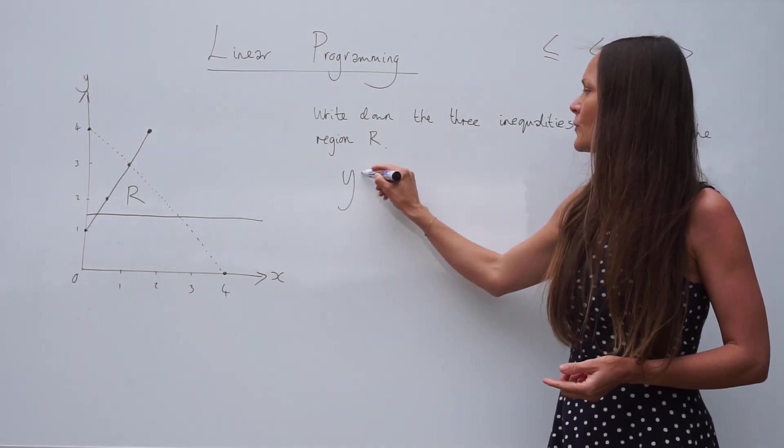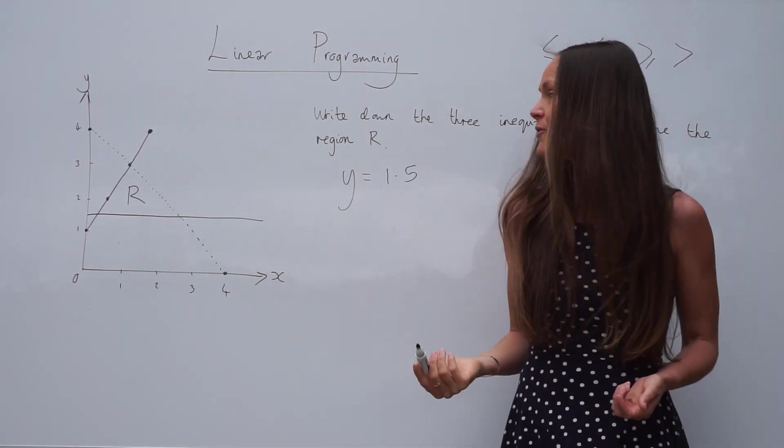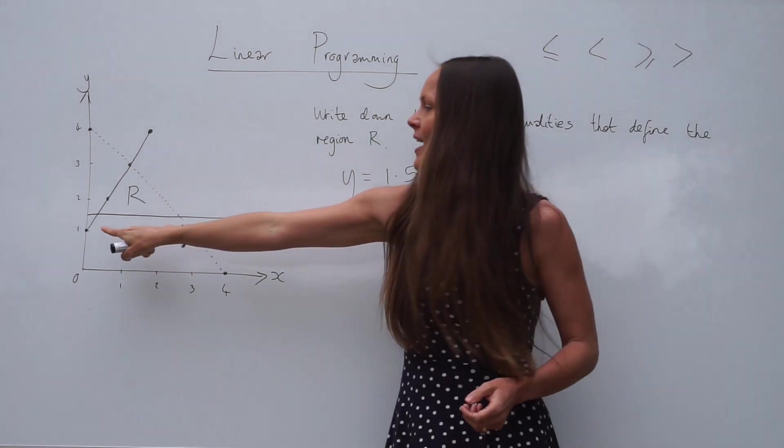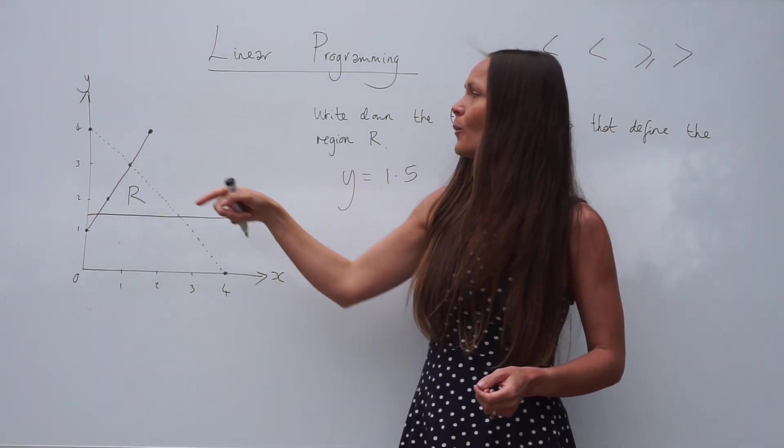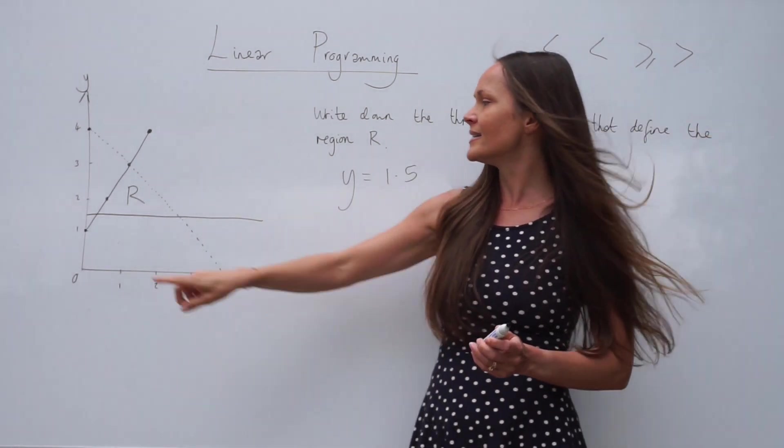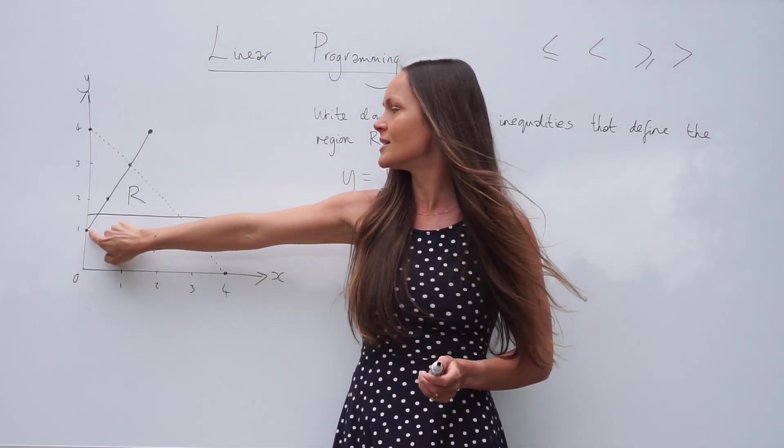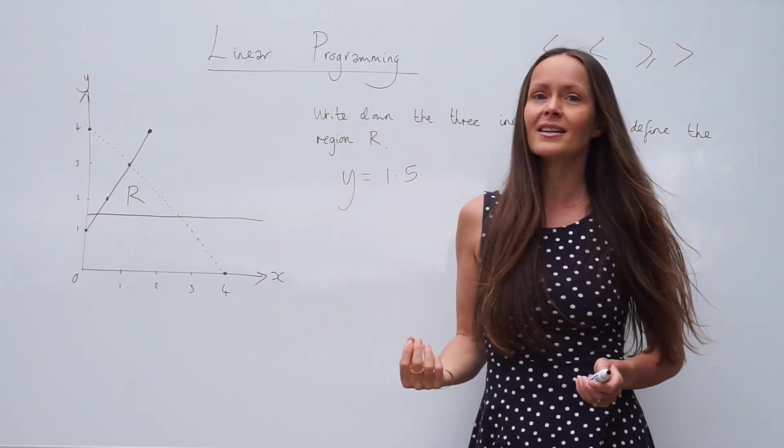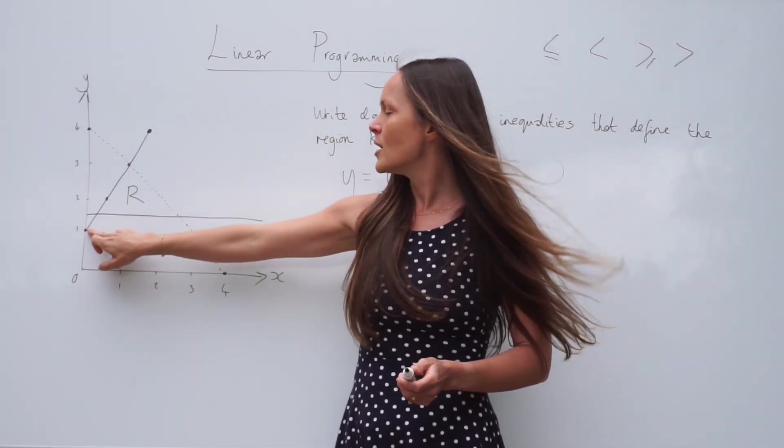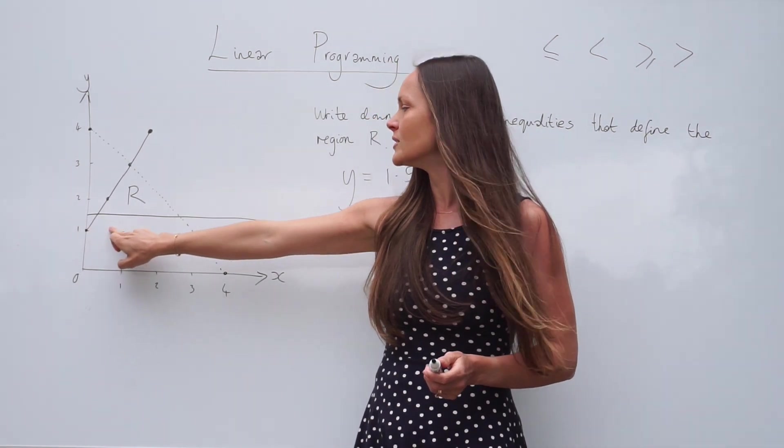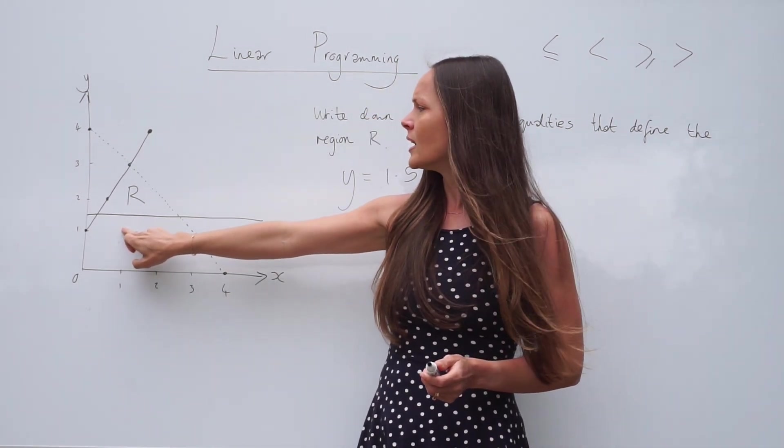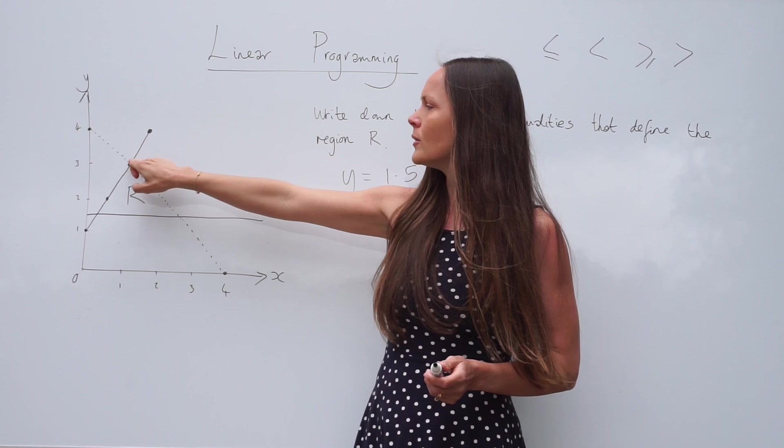So the equation of that line would be y equals 1.5. Now let's look at this line here. So the y intercept of this line is here. The straight line crosses the y axis at positive 1. The gradient of this line is positive 2. Because when I move one unit to the right, I move two units up.